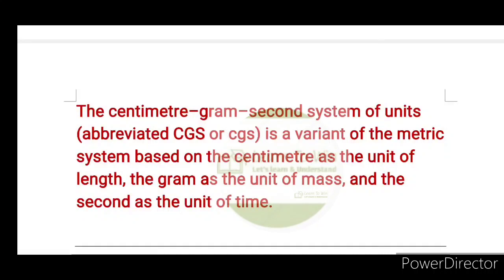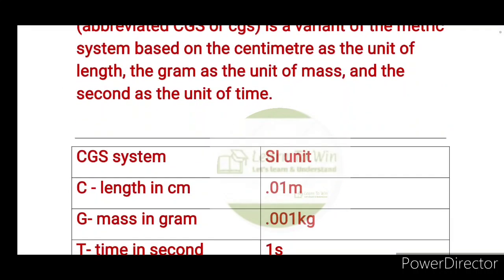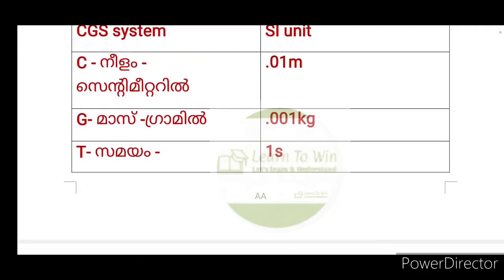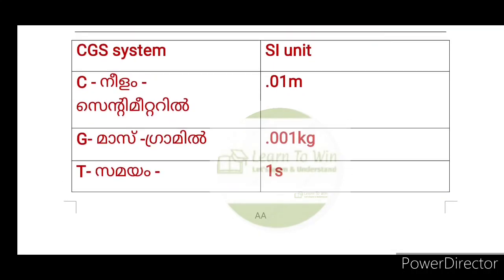The CGS system is based on centimeter as the unit of length. The length unit is centimeter, mass unit is gram, and time unit is second. C is length in centimeter, where the SI unit is 0.01 meter. G is mass in gram, where the SI unit is 0.001 kg. T is time in second, where the SI unit is 1 second.